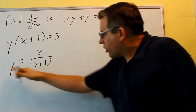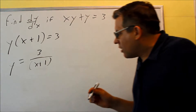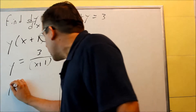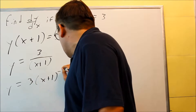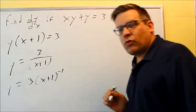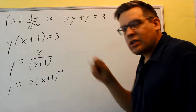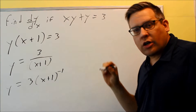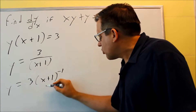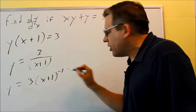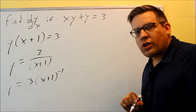Then we're going to apply the derivative to both sides. I'm going to first rewrite it as 3 times (x plus 1) to the negative 1. Could I have done this with quotient rule? Yes, I could have, but instead you can write it with a negative power and apply the chain rule instead.